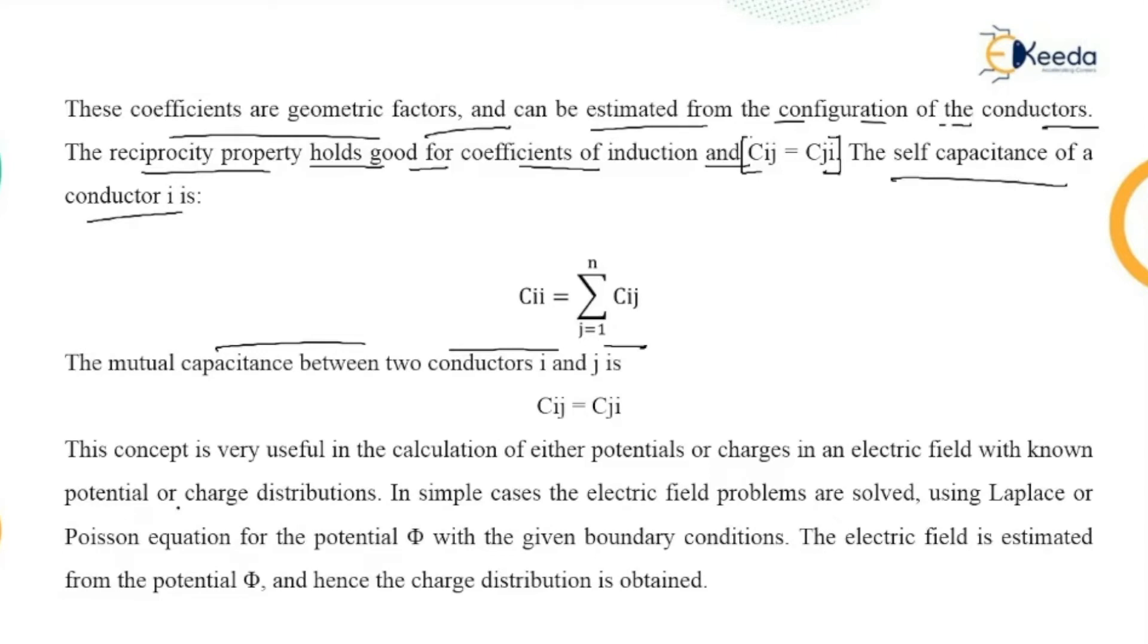This concept is very useful in the calculation of either potentials or charges in an electric field with known potential or charge distributions. In simple cases, the electric field problems are solved using Laplace or Poisson equation for the potential φ with the given boundary conditions. The electric field is estimated from the potential φ, and hence the charge distribution is obtained.